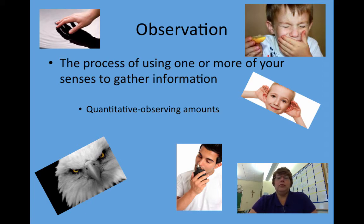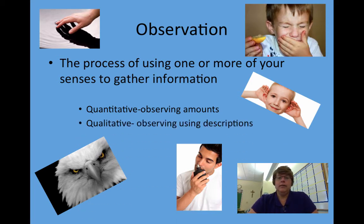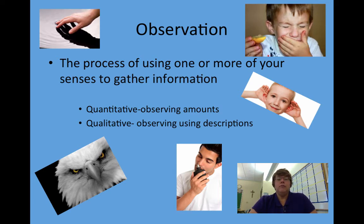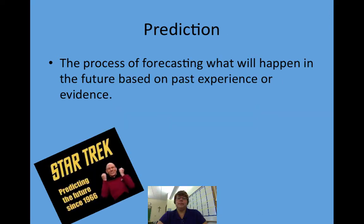Don't forget that there are both quantitative observations, which means you're observing amounts — for example, 'there are three people in this picture' or 'the man is using four of his five fingers to touch the water' — and also qualitative observations, which use description words like 'it sounded like a train was going by,' 'it felt really smooth,' or 'it tasted really sour.'